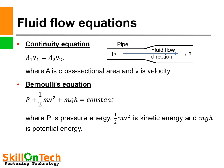Bernoulli equation: the energy of a liquid flowing in a pipeline remains constant at two points. So that is P plus ½mv² plus mgh equals constant. Where P is pressure energy, ½mv² is kinetic energy, and mgh is potential energy. While applying the Bernoulli equation at two points, we will also consider frictional losses of the pipeline.